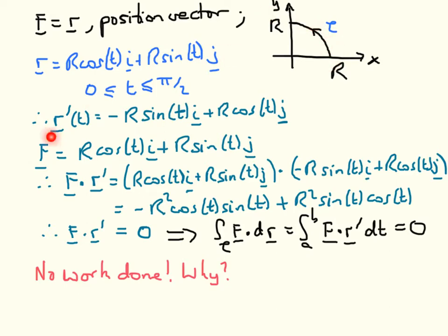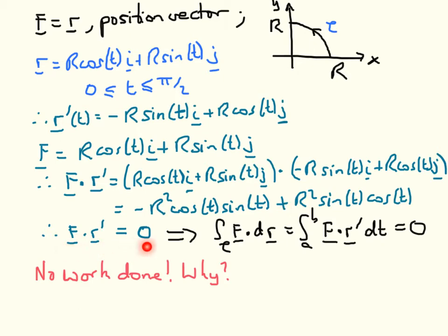We differentiate r with respect to our parameterisation and get −r·sin(t)·i + r·cos(t)·j. We can rewrite F — but we don't need to in this case, because it's given as the position vector: r·cos(t)·i + r·sin(t)·j. Taking the scalar product of these two, we find that the two terms are the same but with opposite signs, so the scalar product vanishes.